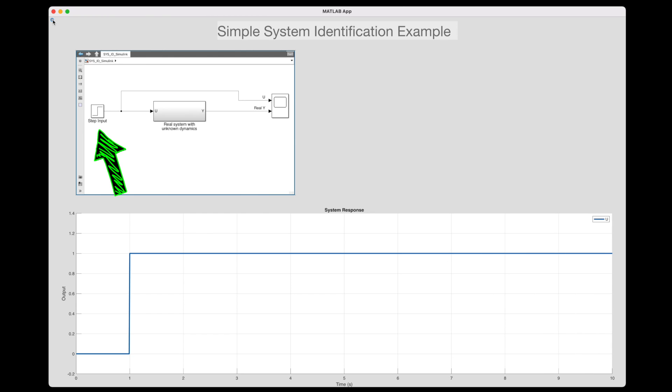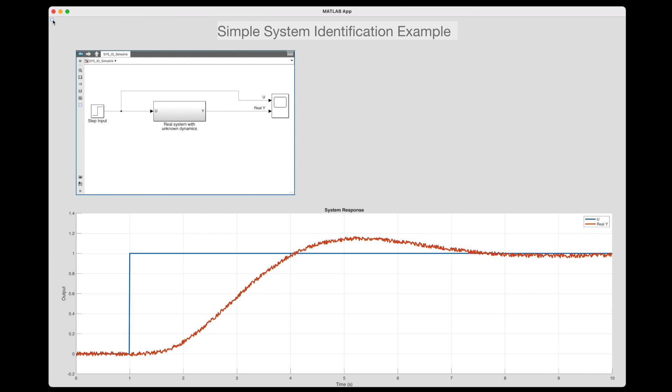So given this particular input, the system produces this output. Now I want to fit a model to this data. And since it's a single input, single output system, and it doesn't look like there's much delay in the system, I'm going to just choose a transfer function as the structure. Now, as far as how many poles and zeros to use, well, I can get a first guess of it by looking at the data. Since there's a slight overshoot, I know that this is at least a second order system. And since the steady state error is about zero, then the zeroth order terms will be equal. So I'm going to try to fit this transfer function with two poles and no zeros.